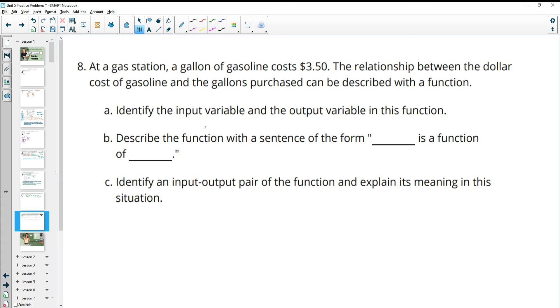Number 8, at a gas station, a gallon of gasoline costs $3.50. The relationship between the cost of gasoline and the gallons purchased can be described with a function. Identify the input variable. So what are you changing? What are you picking when you go to the gas station? And that's the number of gallons of gas that you put in your car. And then the output is going to be your cost. So when we describe the function in sentence form, the output goes here and then the input goes here. So as we use this sentence, we would say the total cost of our gasoline is a function of the number of gallons that we would put in our car.